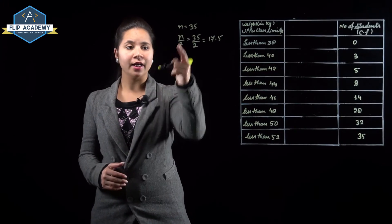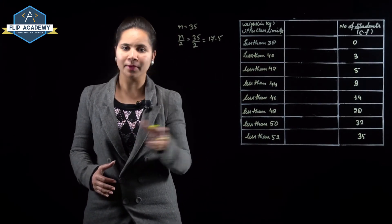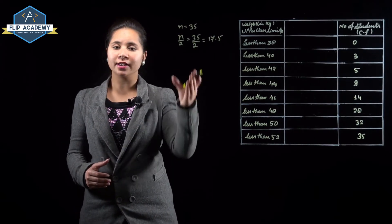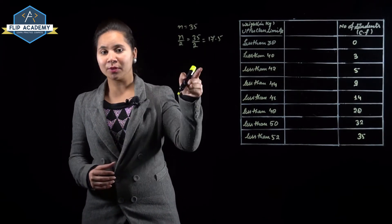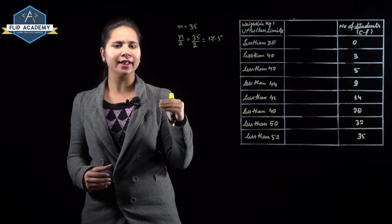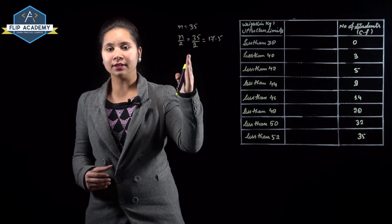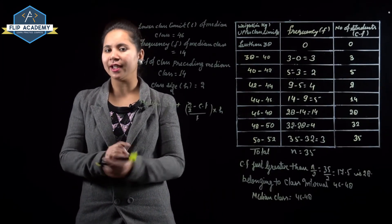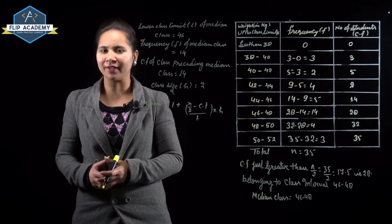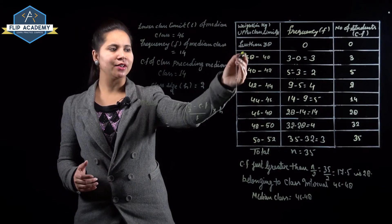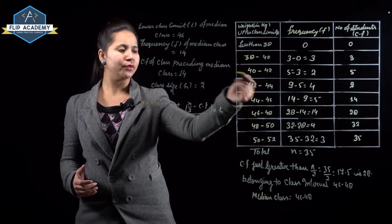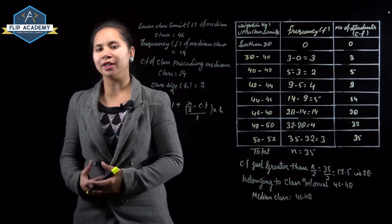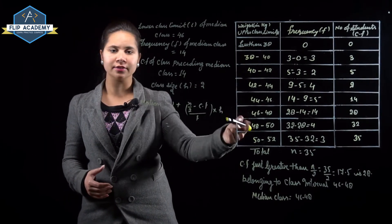Total number of students is 35, so N/2 = 17.5. To find the median class using the formula, we convert the less than type cumulative frequency table to a general frequency table. The class intervals are: 38–40, 40–42, 42–44, 44–46, 46–48, 48–50, and 50–52.